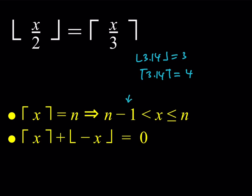The second bullet point is also interesting because it allows you to relate the floor value of x, or negative x, with the ceiling value of the same variable. For example, take 3.14: the opposite is negative 3.14, and its floor value is negative 4, because we round down. Meanwhile, the ceiling value of 3.14 is 4. Their sum is always 0.